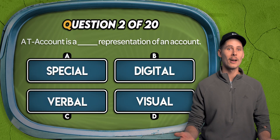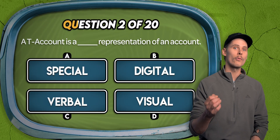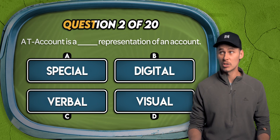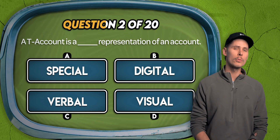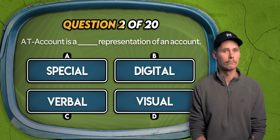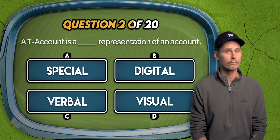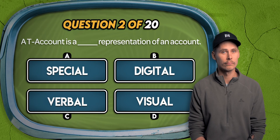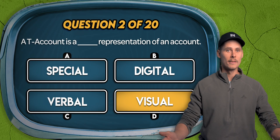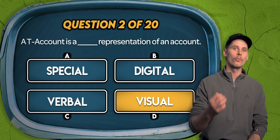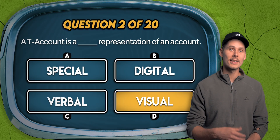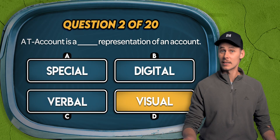Question 2. A T-account is a blank representation of an account — special, digital, verbal, or visual? It's D. A T-account is a visual representation of an account. It shows you how debits and credits affect each side.